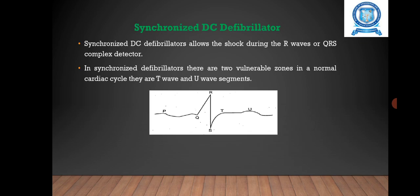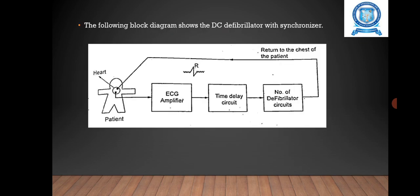The synchronized DC defibrillator allows the shock to be delivered during the R wave or QRS complex. In synchronized defibrillators, there are two vulnerable zones in a normal cardiac cycle: the T wave and U wave segments. If the counter shock falls in the U wave segment, atrial fibrillation is produced. If it falls in the T wave segment, ventricular fibrillation develops. The ECG waveform from the patient is amplified, and patients with sudden cardiac arrest can be treated immediately. This type of defibrillator is preferred in cardiac emergencies.